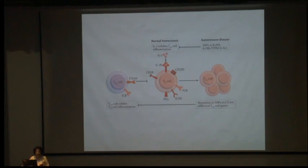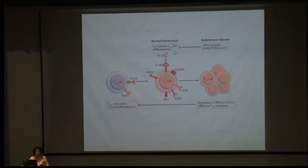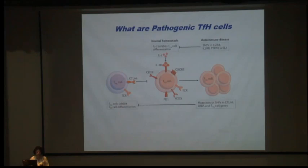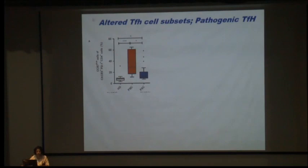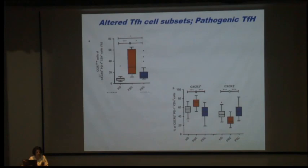SNPs in IL-2RA and IL-2RB impair the IL-2-mediated mechanism that keeps T-regs energized, thereby promoting more T-FH cells with PD-1, ICOS, and CXCR5 expression — these become pathogenic T-FH cells. In this paper, they found more CXCR5+PD-1+ CD4 T-FH cells in PBC, and these pathogenic T-FH cells expressed CXCR3, which was increased in PBC. CXCR3-negative T-FH cells were decreased in PBC.